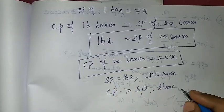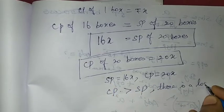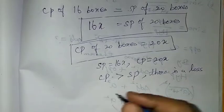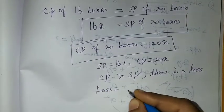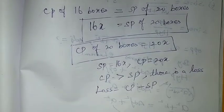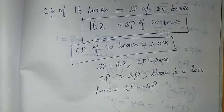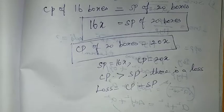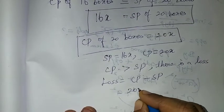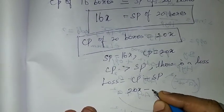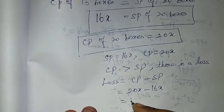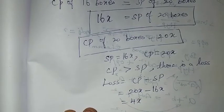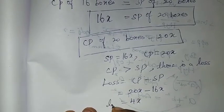There is a loss. The loss formula is CP minus SP. CP is 20x, SP is 16x, so 20x minus 16x equals 4x. So the loss is 4x.